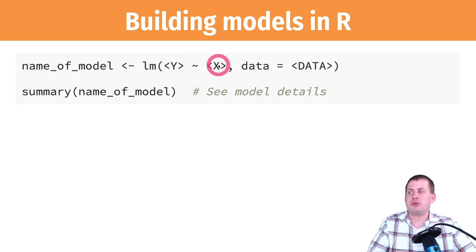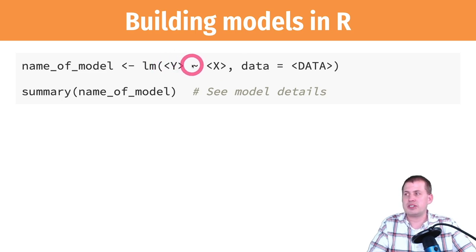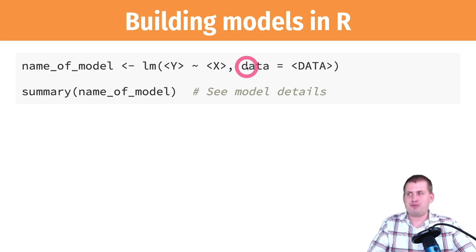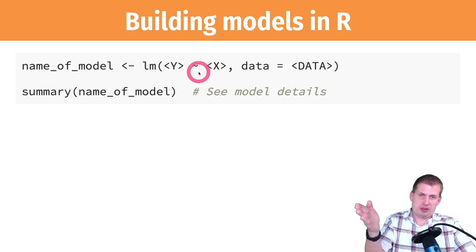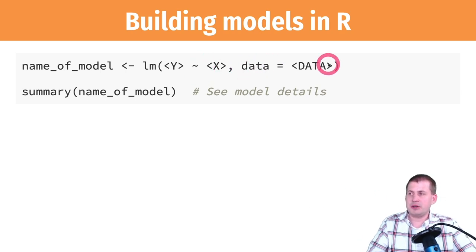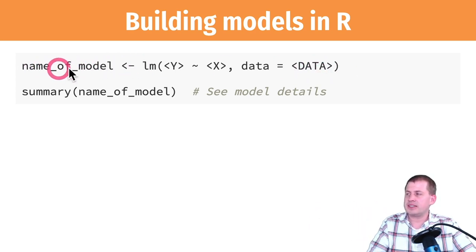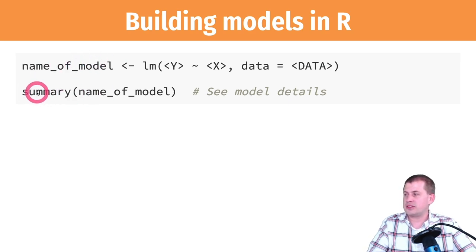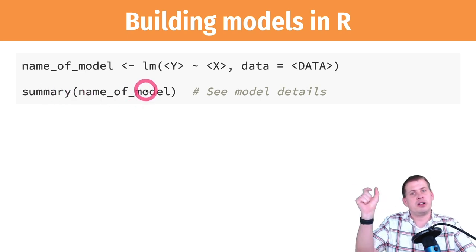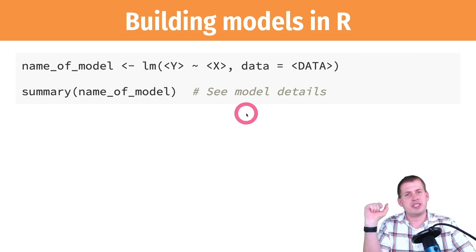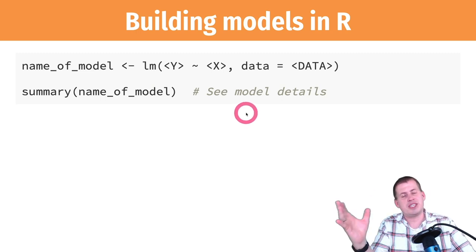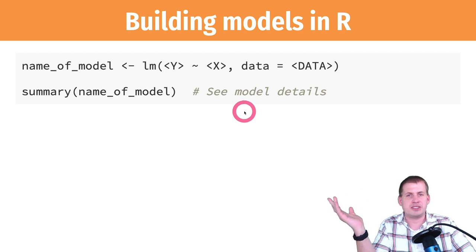You type y ~ x, essentially. If you just have one x like humidity, it would be temperature_high ~ humidity. If you want multiple variables, you'd say temperature_high ~ humidity + moon_phase + precipitation — you can put all the variables you want. Then you tell it what dataset to look at with data = name_of_dataset. You typically save this as an object. If you run summary(name_of_model), it will show all the coefficients, p-values, standard errors, and other diagnostic information as a block of text.